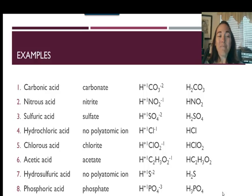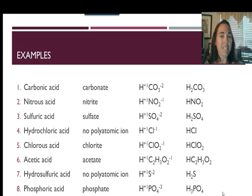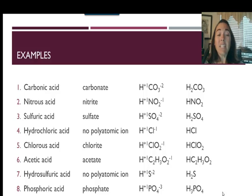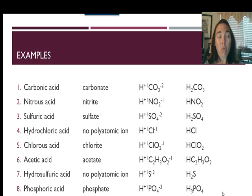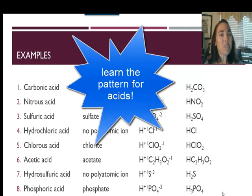Last one: phosphoric acid. I see '-ic acid' on the end, so it comes from a polyatomic ion ending in '-ate' — that's phosphate, PO4 with a −3 charge. Criss-crossing gives H3PO4. Those are just a few examples. I hope you're starting to pick up on the pattern, and we'll practice more next time we're together.